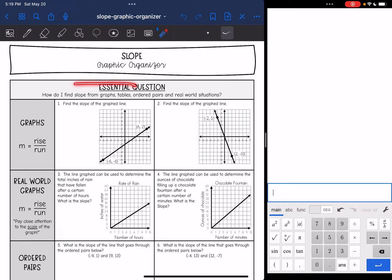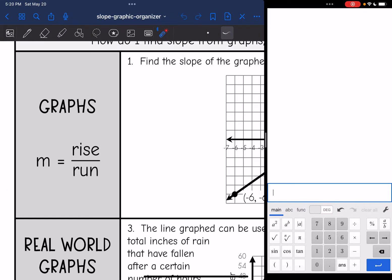Hey guys, today we're going to answer the question, how do I find slope from graphs, tables, ordered pairs, and real world situations? So let's start with graphs.